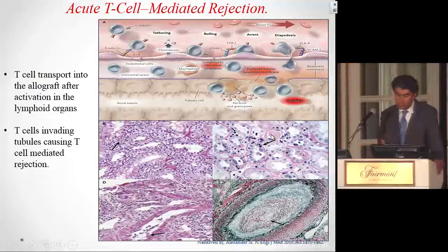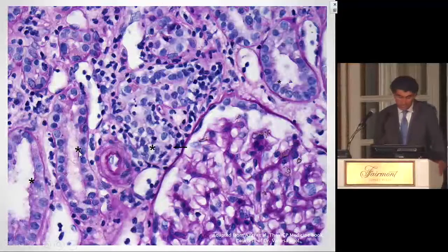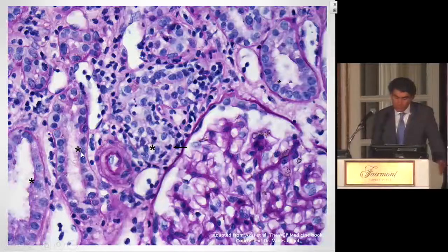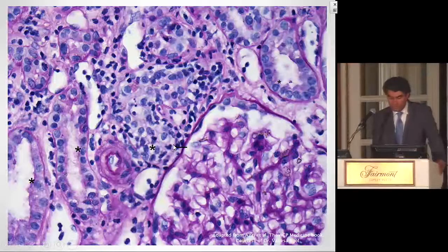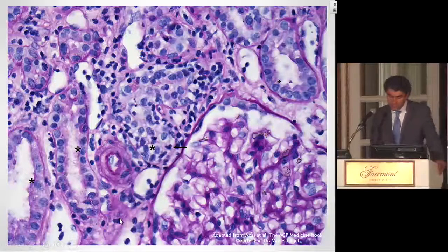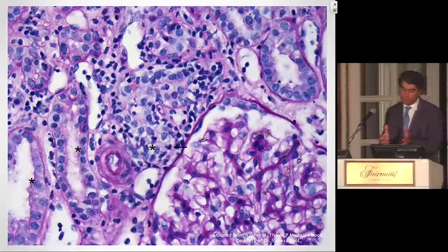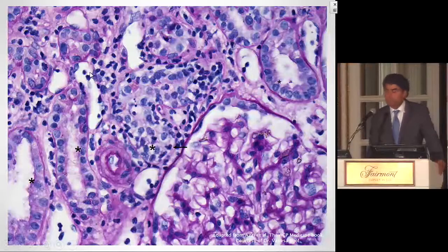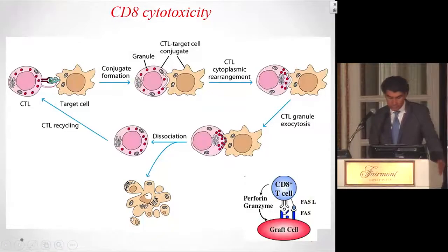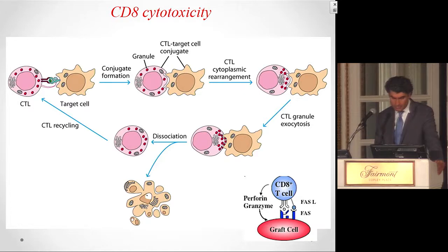Tubulitis is a hallmark of T cell-mediated rejection. On biopsy, you can see small, dense lymphocyte nuclei inside the tubules — distinct from normal tubular cell nuclei. These T cells come out of the tiny vessels between the tubules, invade the interstitium, and cause interstitial inflammation and tubulitis — this is T cell-mediated rejection. The cytotoxic T cells are directly causing cell death.